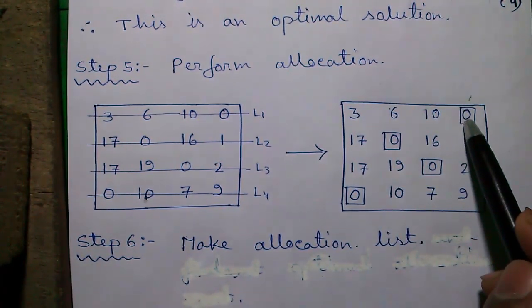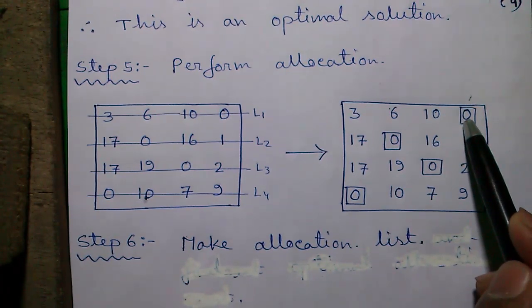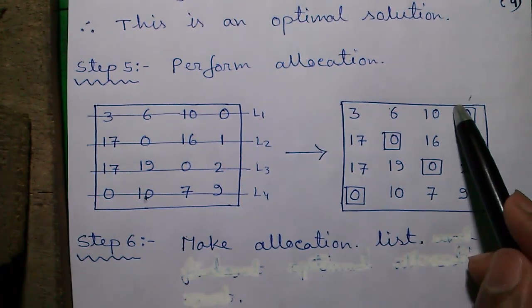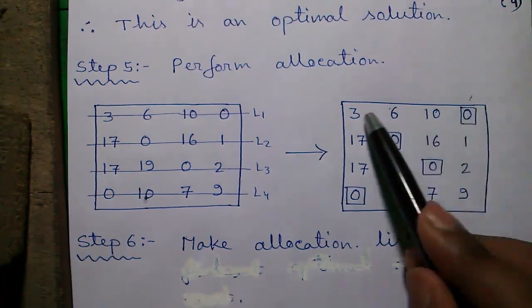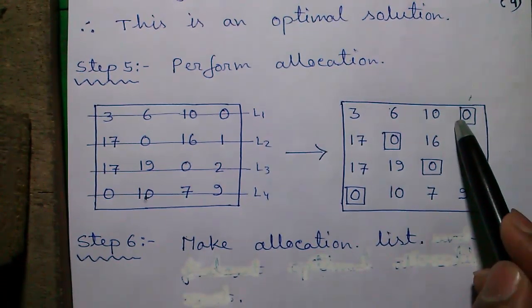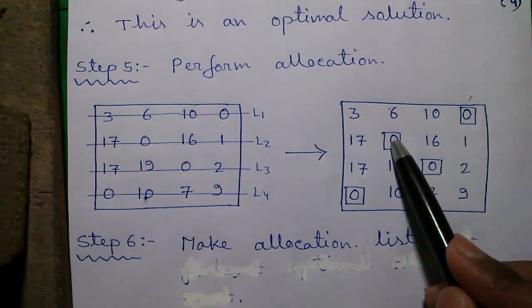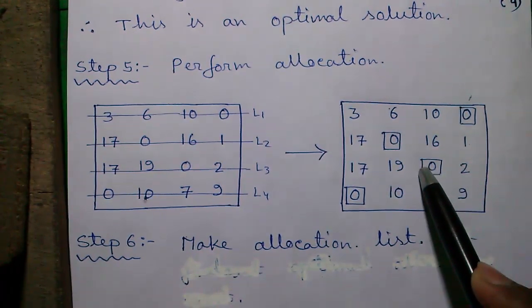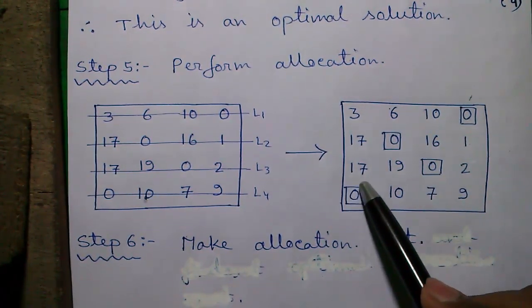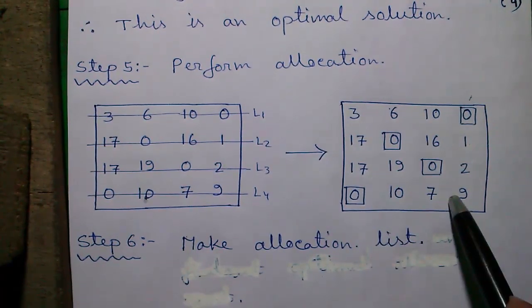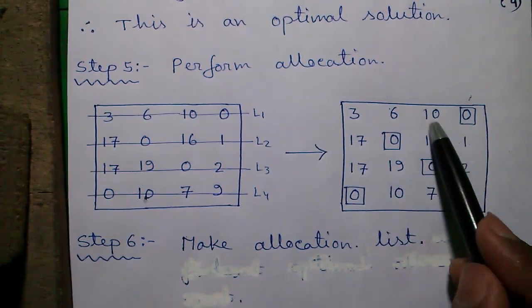To know more about this allocation you can also watch that video. There I described the matter also. So for now we have exactly one 0 in row 1, so we will do our first allocation here. In row 2 again we have one 0, so we will do our second allocation. In row 3 we will do our third allocation, and row 4 we will do our fourth allocation. So all the allocations are done.